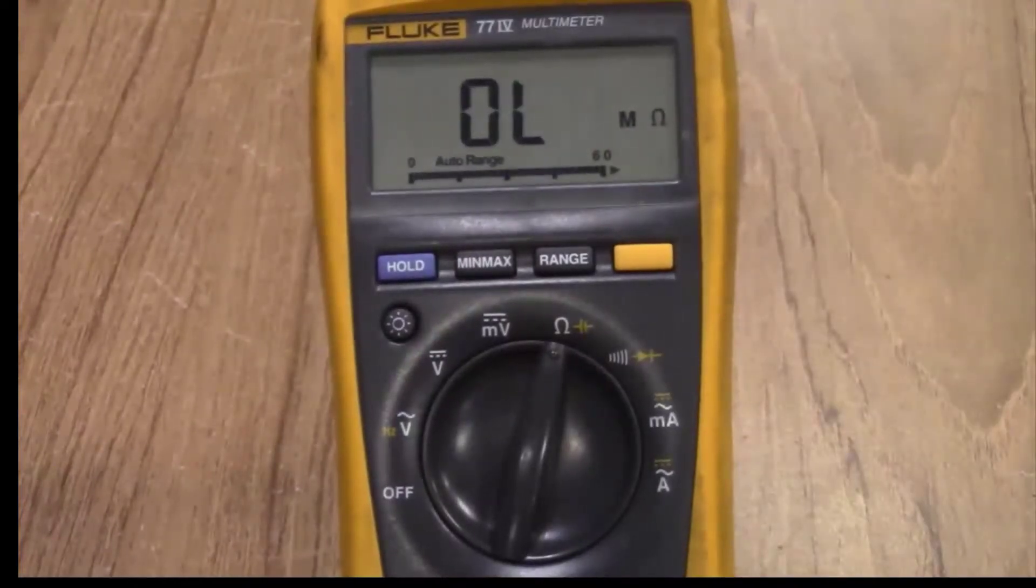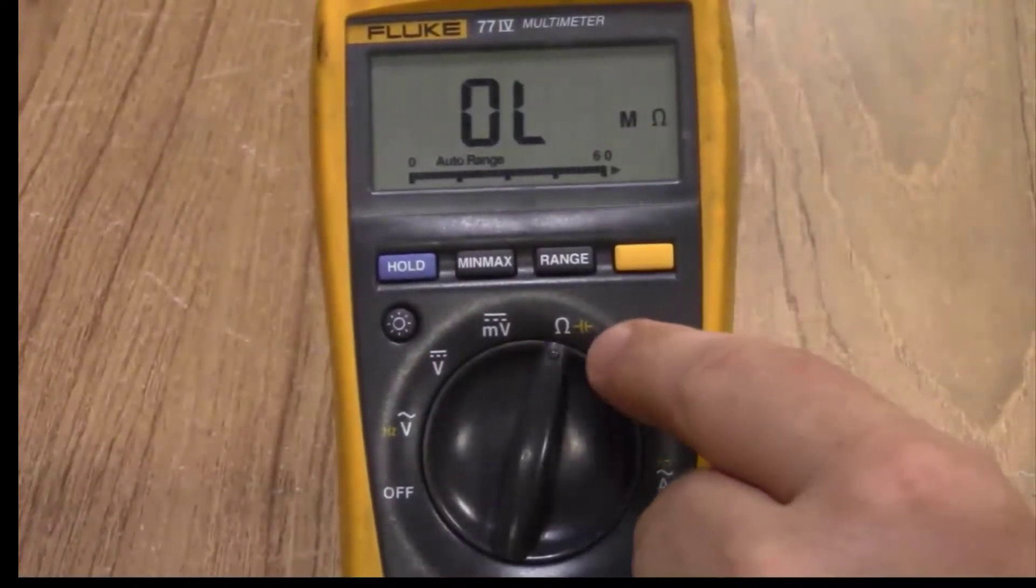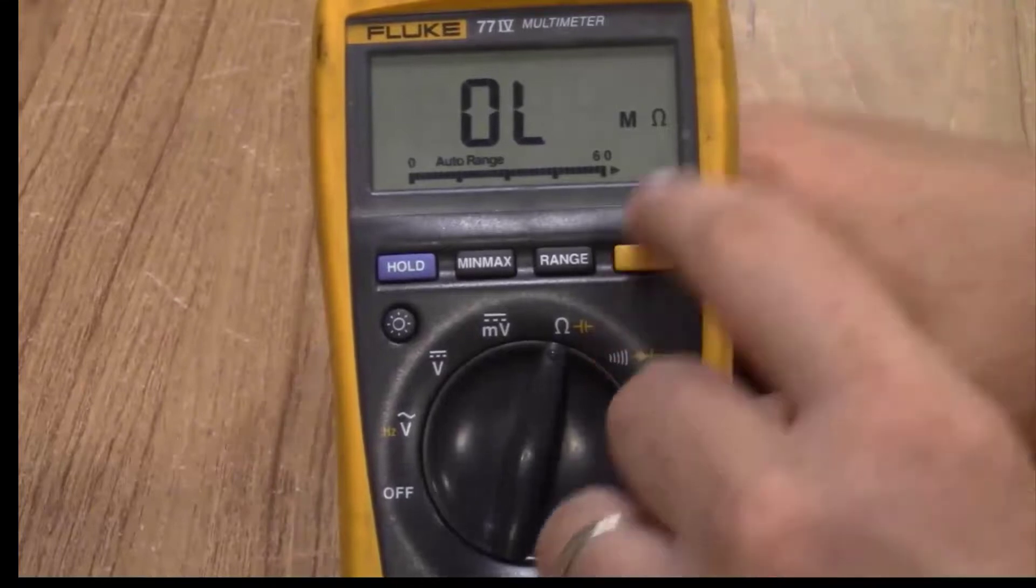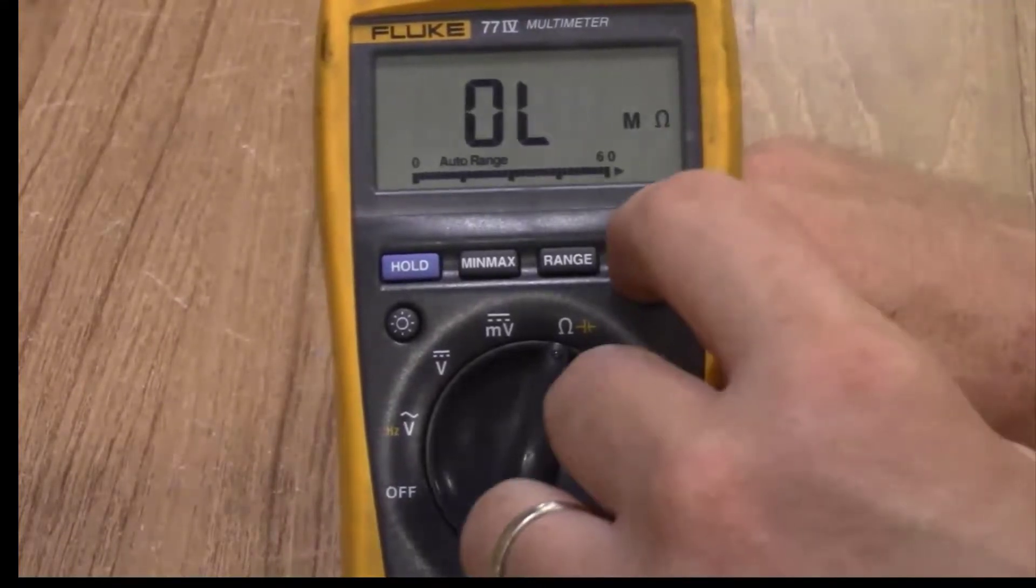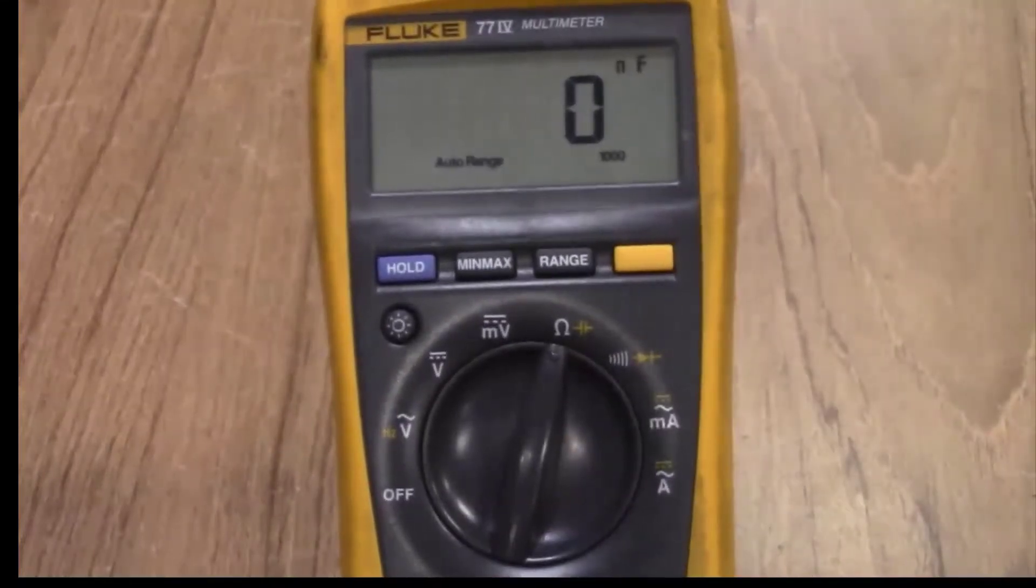If you want to measure resistance in yellow you see a capacitor check. If you push the yellow button it will then measure in farads.